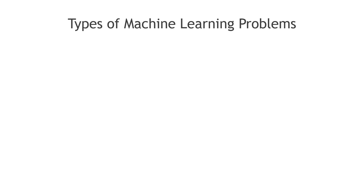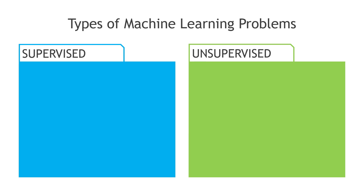Hey everyone! Today I want to go through some machine learning basics. Let's start by talking about two types of machine learning problems: supervised and unsupervised. A third category would be reinforcement learning — if you want me to do a video about that, let me know in the comments — but we're going to focus on these two, starting with some examples.